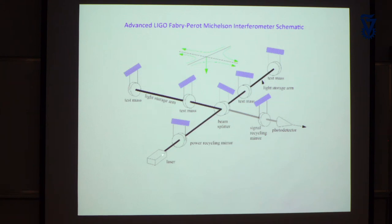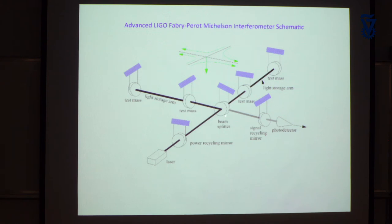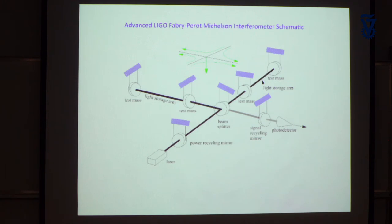Power recycling allows you to have, for example, a 25-watt laser here, with something like a kilowatt of light in the small cavity between that mirror and the beam splitter, and something like a quarter of a megawatt in the Fabry-Perot arms because of the bouncing back and forth. What you've done is raise the carrier amplitude inside those cavities so the sidebands generated by the gravitational wave become as large as possible.